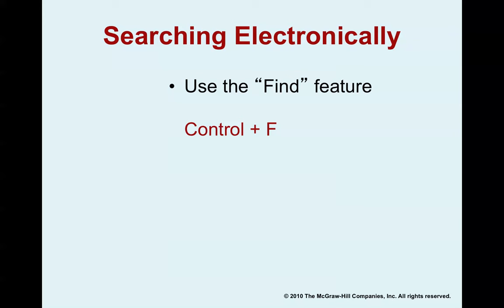If you're doing some searching electronically — whether on websites or in a downloaded Word document — especially if it's a large one, you might find the document is several pages with lots of extra material. To save time, use the find command. Open the find feature by hitting Ctrl+F at the same time. It opens a small search bar where you type in the word or phrase you're looking for. Hit enter, and it will highlight every instance of that term in the resource, so you can skip all the extraneous material.